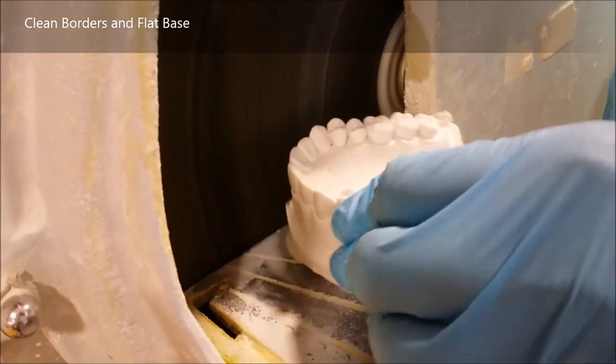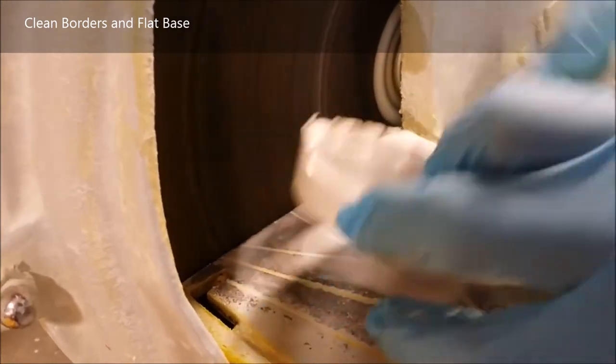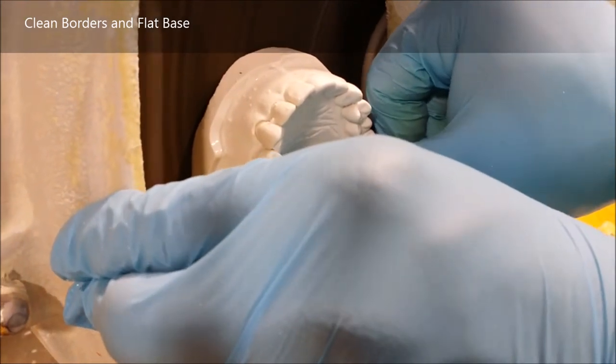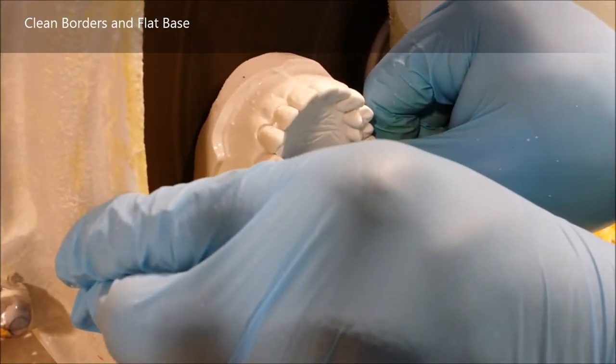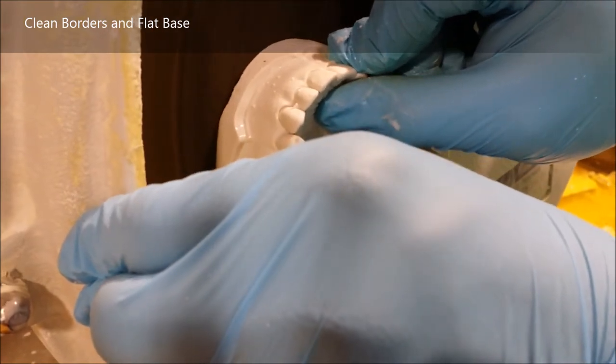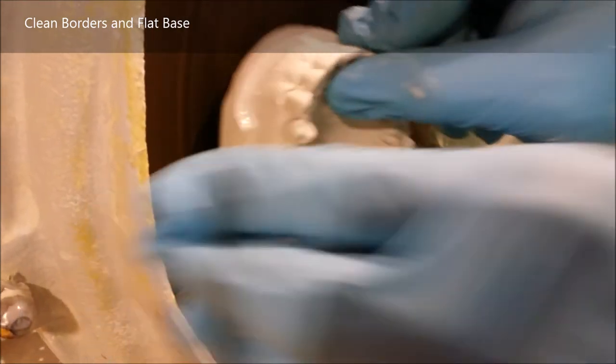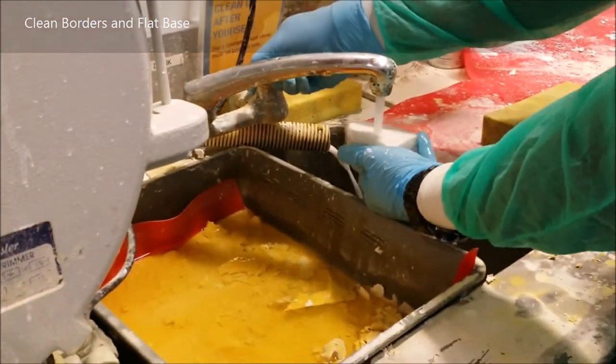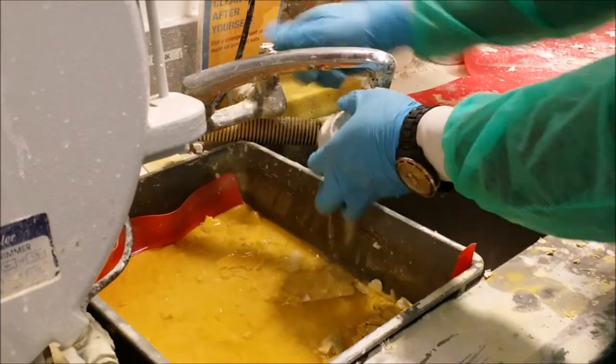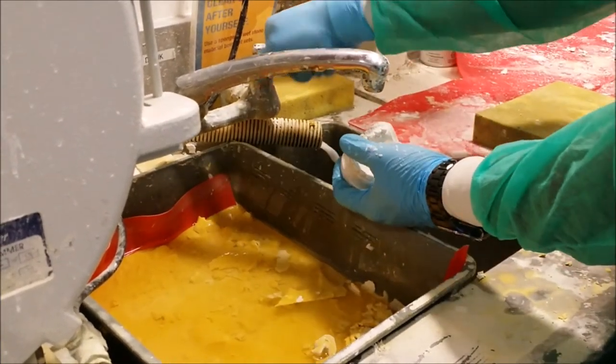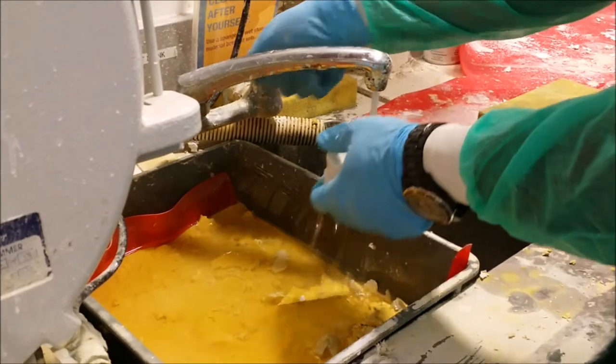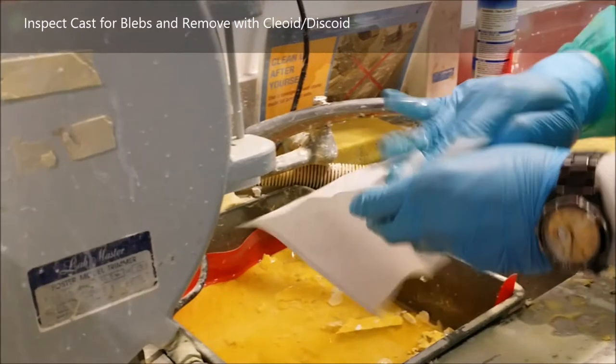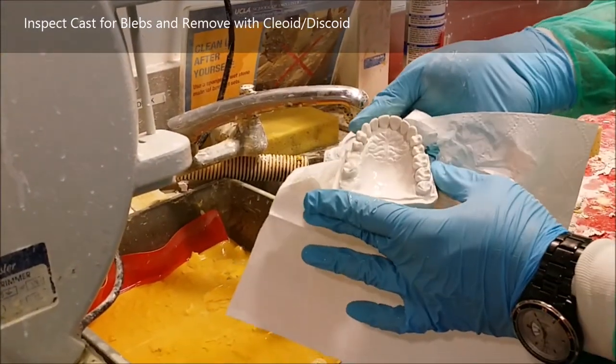This particular machine is very aggressive with plaster but it's a little less aggressive with improved stone or improved die stone, which are yellow and blue respectively. At the end you want to flatten the bottom surface to make sure that your cast will sit flush with the ground, and then wash your cast one final time to get rid of any plaster sludge that accumulated while you were trimming the model itself.